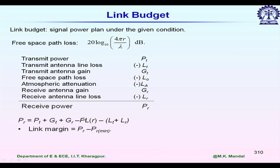We will be using this formula: PL as a function of r, where PL represents the path loss. In the table, free space path loss is considered as L-naught, and in decibel scale it is represented as PLR.